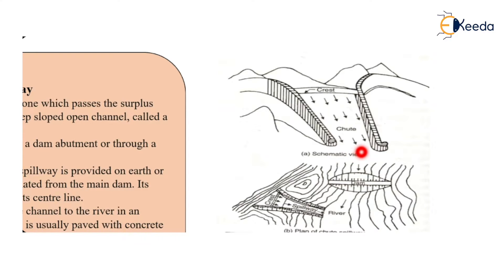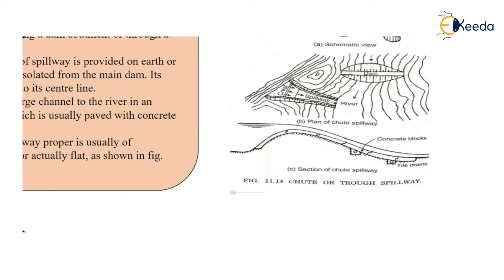When you have steep abutments located on the sloped section and the saddle section, then you can provide this sloped open channel. This is an open channel, not a closed one. You can provide this open channel which is helpful and is constructed for passing the surplus water from the upstream side and from the dam section up to the downstream section. The top portion is generally kept wider and the bottom portion is kept narrower. The water carries the highest level over here, and the base of the chute or trough spillway can be made up of concrete blocks.